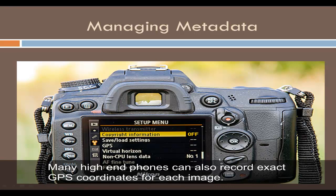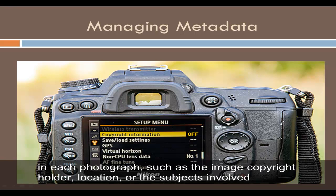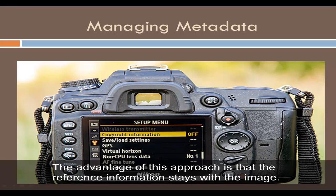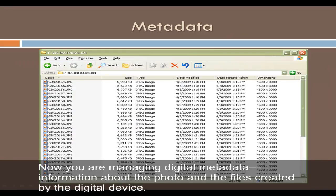Every user should be aware of embedded data and use it when possible, like date and time recorded invisibly in the photo. Many high-end phones can also record the exact GPS coordinates for each image. Software such as Photoshop or Adobe Lightroom can embed multiple fields of information in each photograph, such as the image copyright holder, location, or the subjects involved. The advantage of this approach is that the reference information stays with the image. Now you are managing digital metadata — information about the photo and the files created by the digital device.